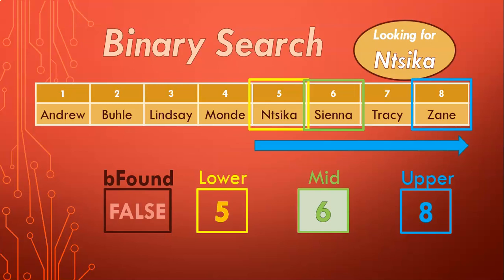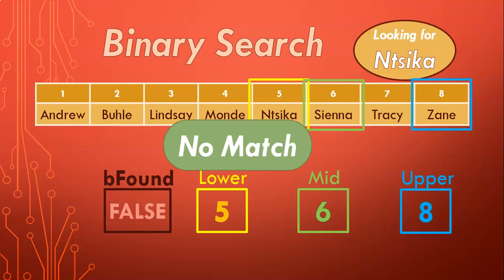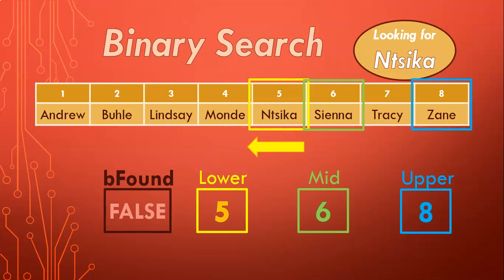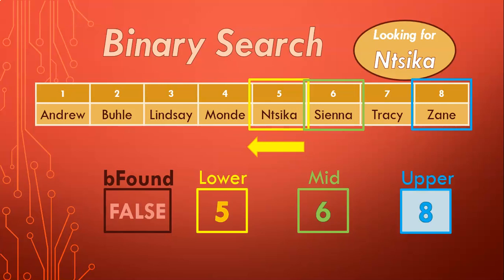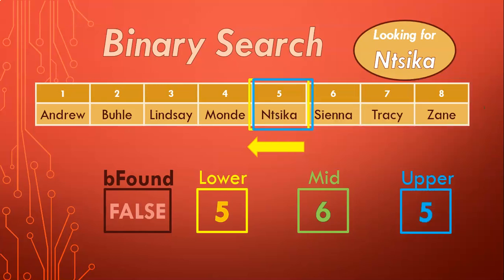We do the whole test again. We look at position six — that's Sienna. Are we looking for Sienna? No, we're looking for Nsika, so that's not a match. Is Nsika on the left or right of Sienna? S comes after N, so Nsika would be on the left-hand side of Sienna. In this case, our lower bound stays at five, but we change the upper bound to one before the midpoint: six minus one equals five. So our new upper point is five. Because our array is small, our lower and upper points are now exactly the same.